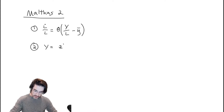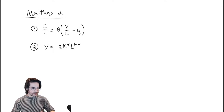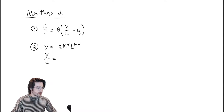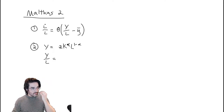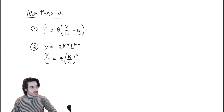Number two is just the production function, which we write as Z times K to the alpha times L to the one-minus-alpha. This says you combine technology Z and land K — it's like capital except it's fixed in supply — and labor L into output. You can divide through by L to get the standard of living, and you simplify to get Z times K-over-L to the alpha.